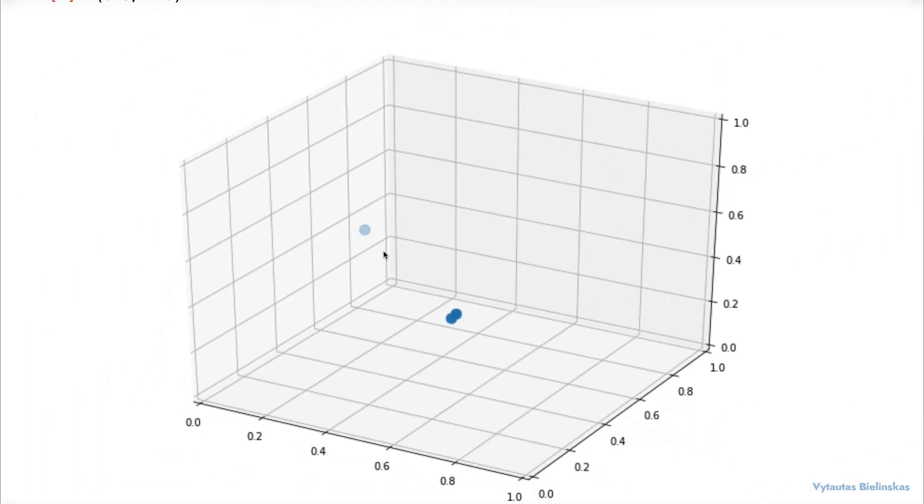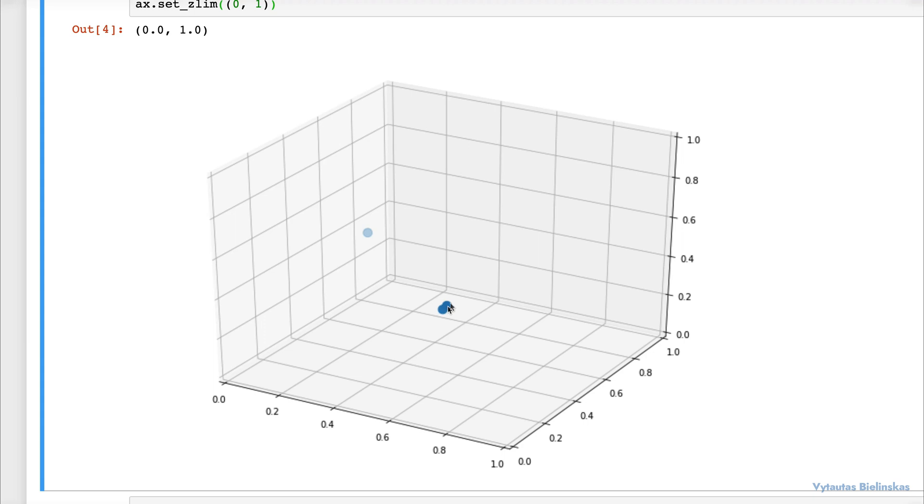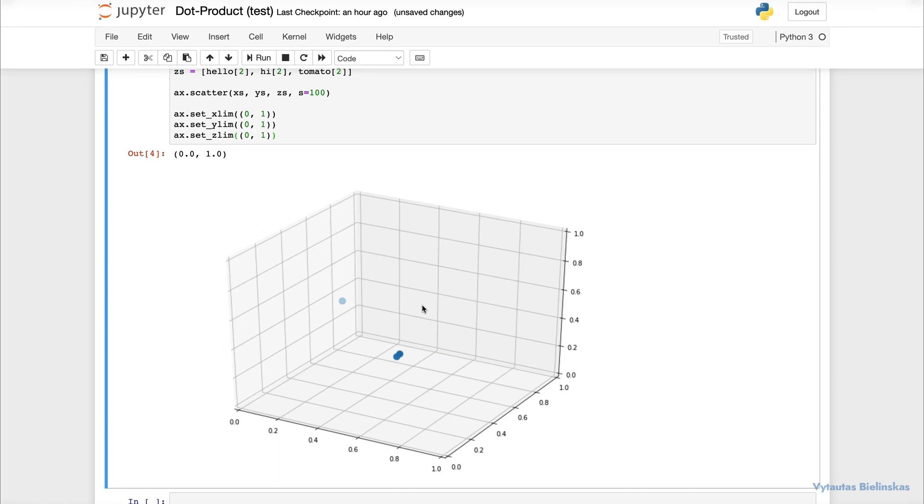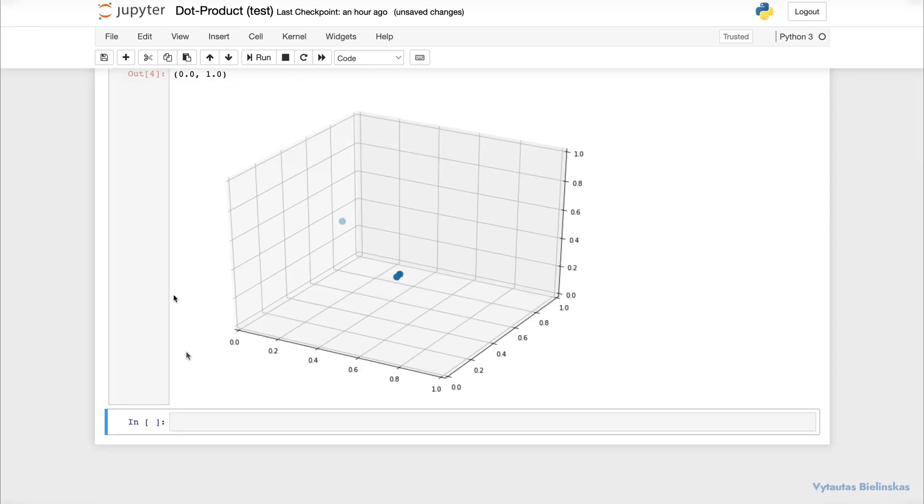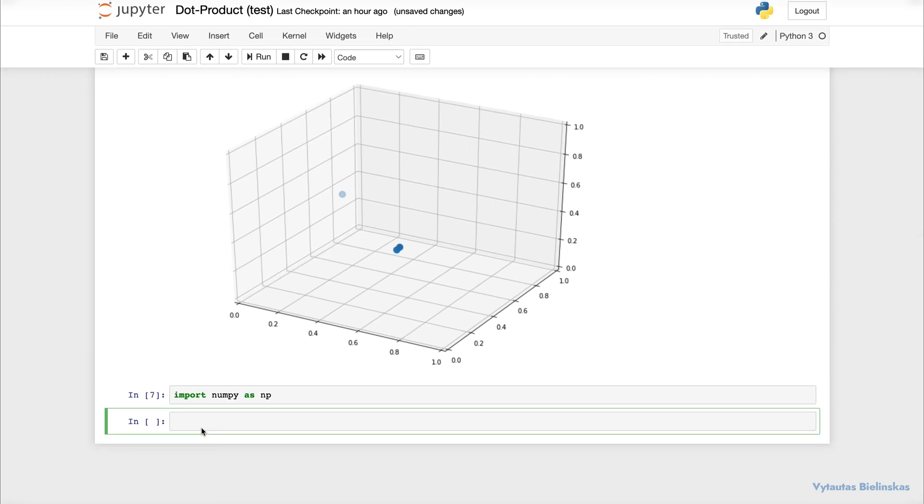Here we check for alignments. We could expect these two to have greater alignments than they do with the other vector, tomato. To measure this alignment we need to calculate the dot product between each one of our vectors. It's a good time to import numpy right here. And let's rename our vectors as a, b and c.